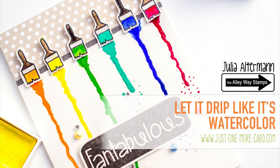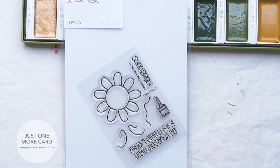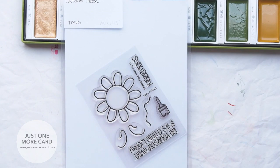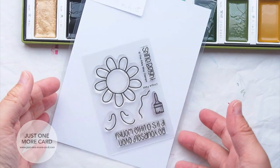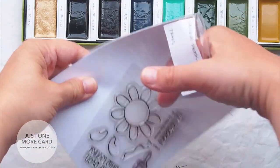Hello everyone, this is Julia for the Alleyway Stamps. Today we're going to have a fun tutorial about how to use watercolor in a different way. We're also going to be using a new stamp set that has just been released by the Alleyway Stamps. It's called Unique Peak and I'll show you what you can do with it.